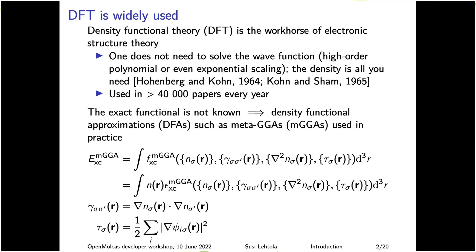The problem is that because we don't know the exact functional, we have to use functional approximations in practice. For instance, the meta-GGA form: your exchange-correlation energy is integrated from the exchange-correlation energy density, which depends on the electron density, the reduced gradient, the Laplacian of the density, and the local kinetic energy density.